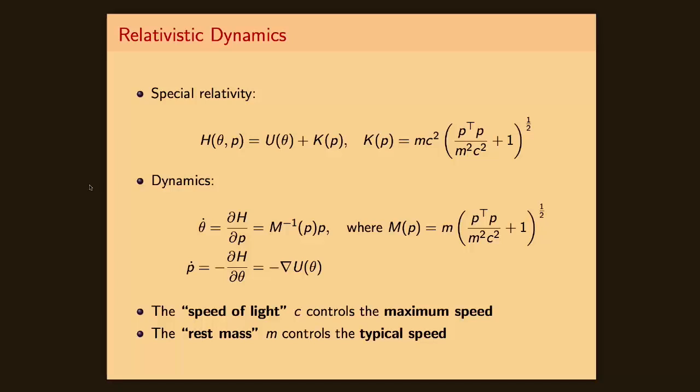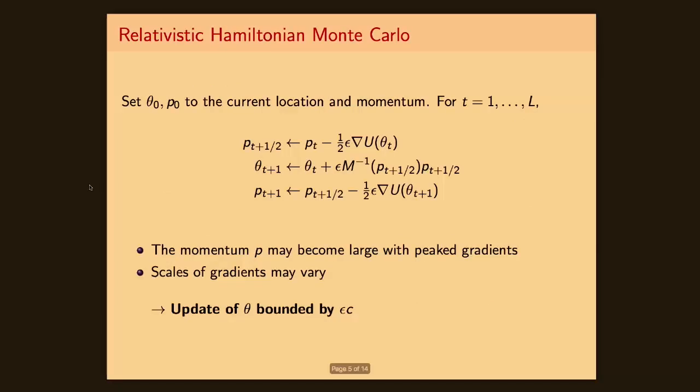On the other hand, the parameter m controls the rest mass of your particles and has a direct impact on the average speed of your parameter changes. So, to give a more concrete example, let's translate these ideas into an algorithm which is very similar to the standard Hamiltonian Monte Carlo algorithm, with the difference being that if you look at the update over the parameter theta, now this is given by the product of epsilon times m⁻¹ times p, the momentum variable.